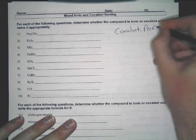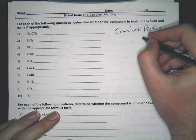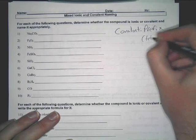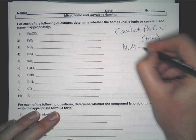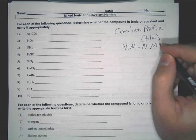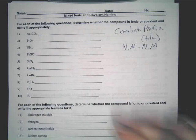So for covalent compounds, you're using the prefixes. Just as a quick reminder, something like tetra. And you also remember that covalent is non-metal to non-metal. Because on this paper, we're now going to do ionic and covalent mixed together.